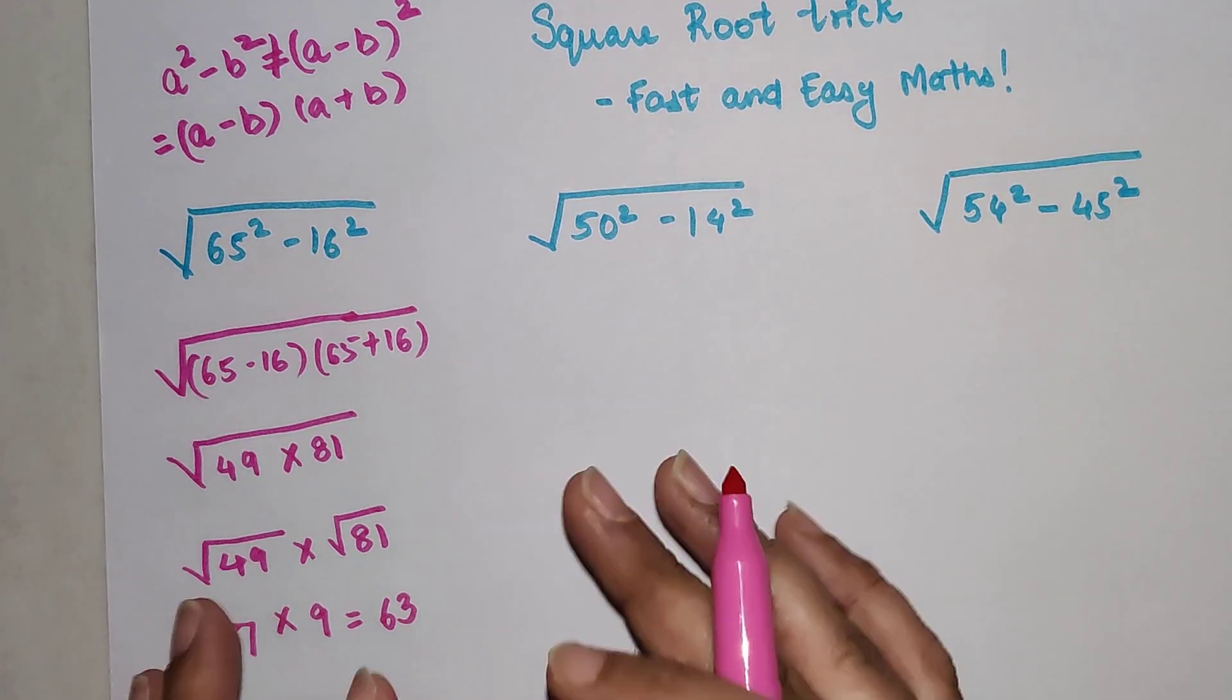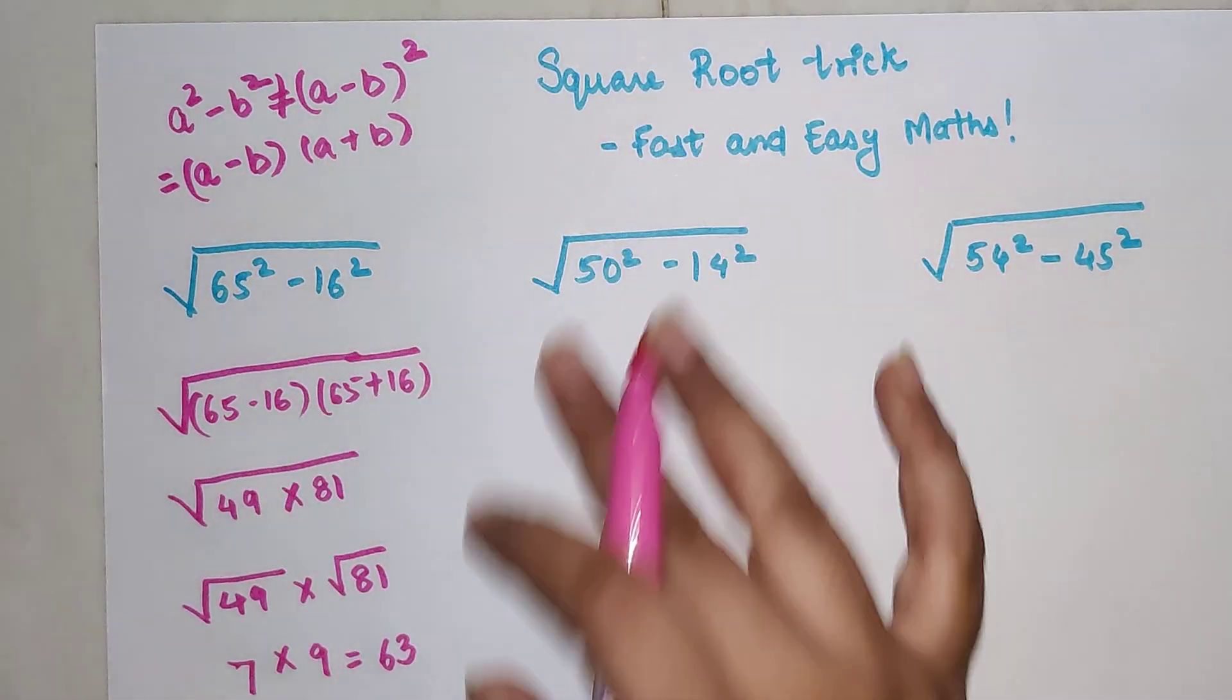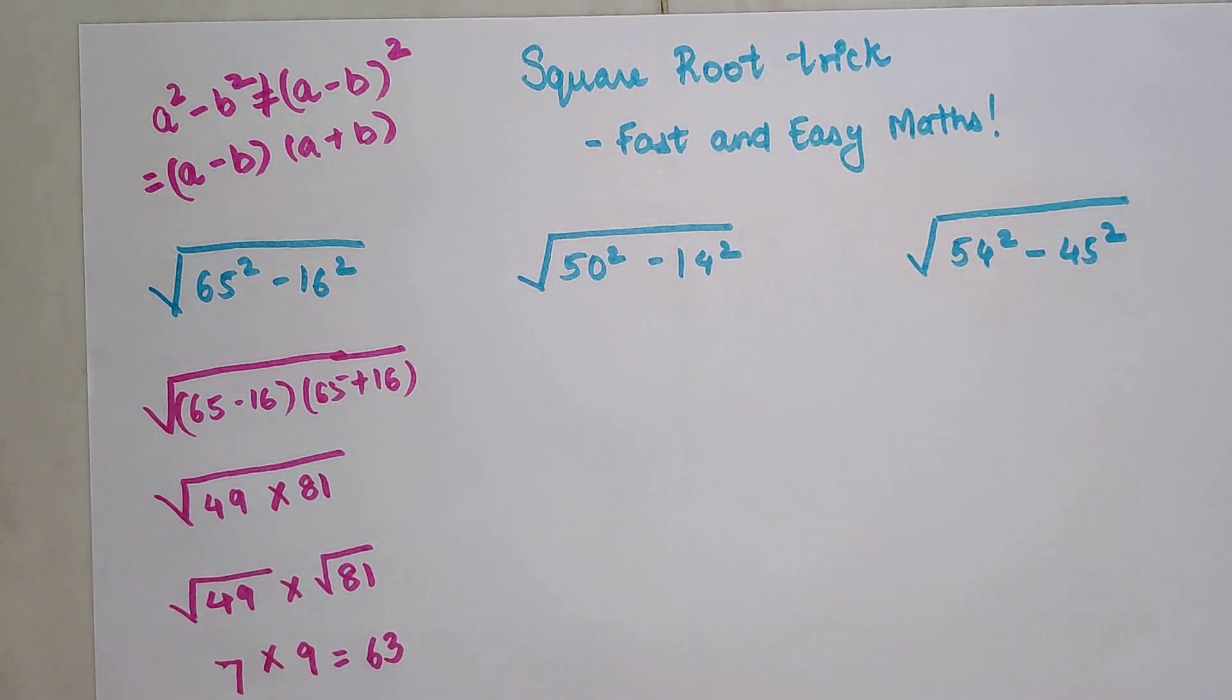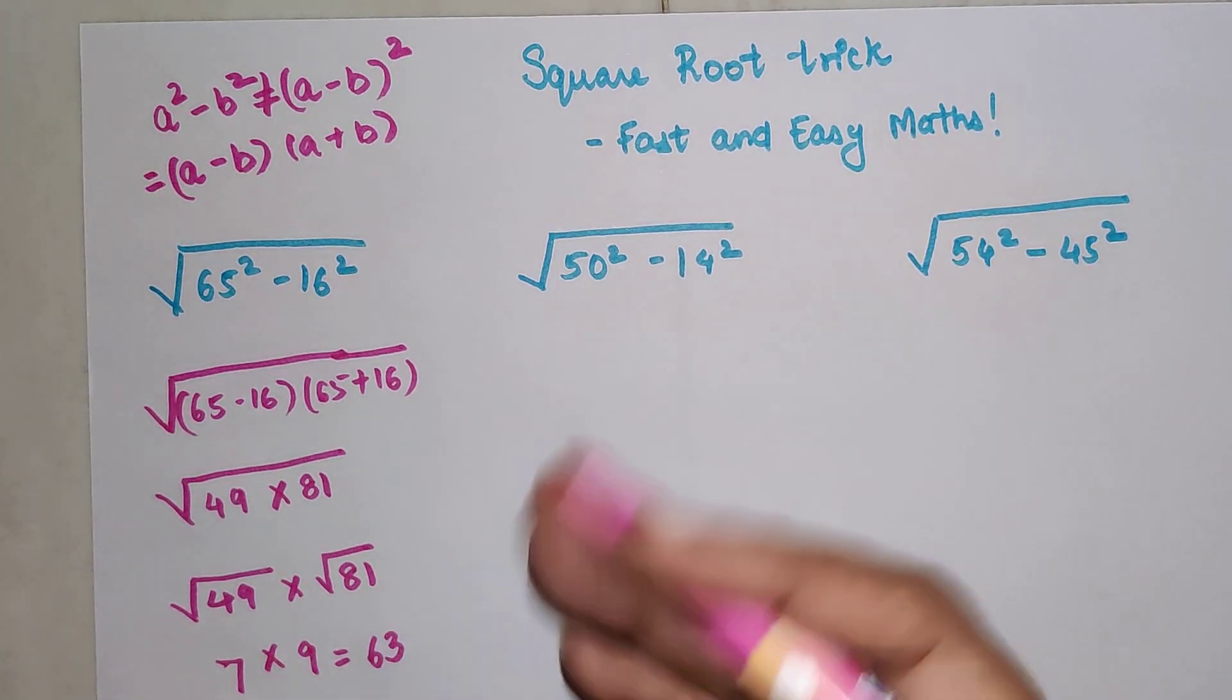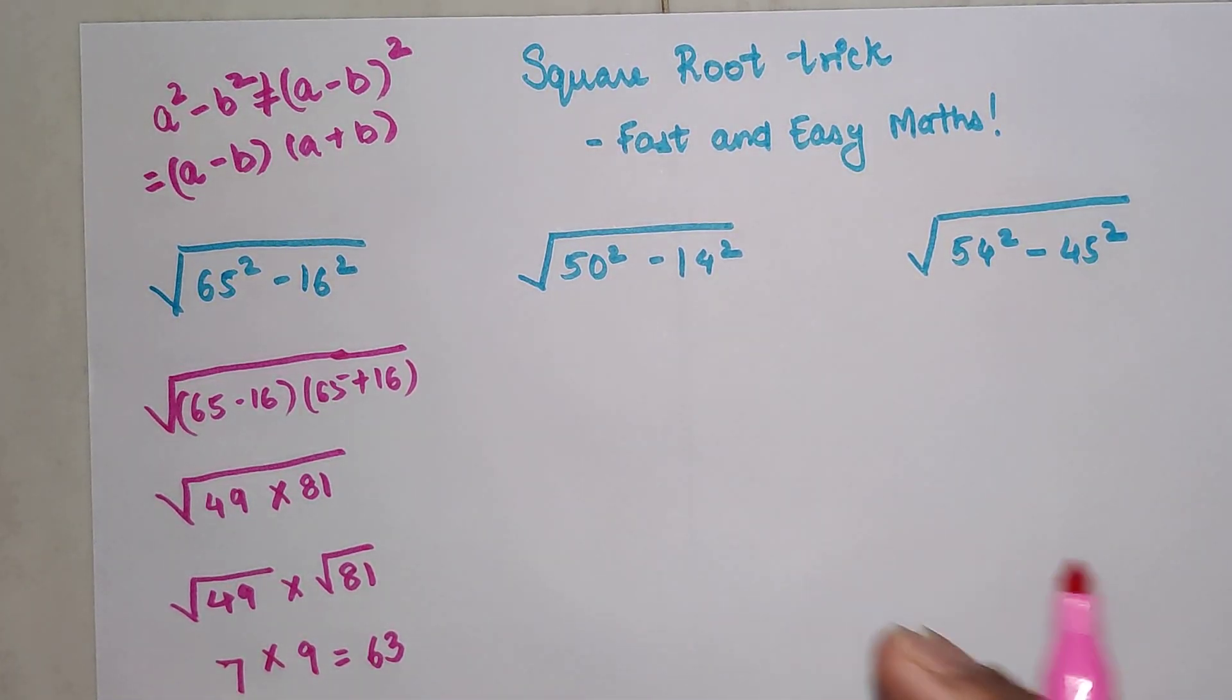I hope you're getting how to use identities when it comes to something which looks very tricky. With the help of identities, you can solve this entire sum in matter of 5 to 6 seconds.